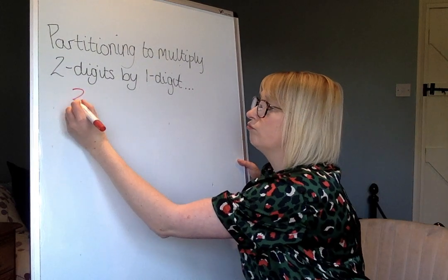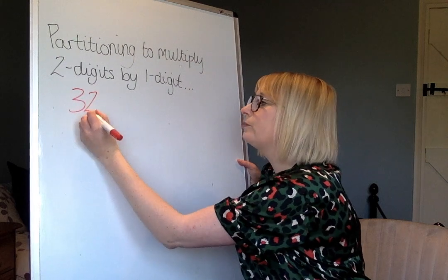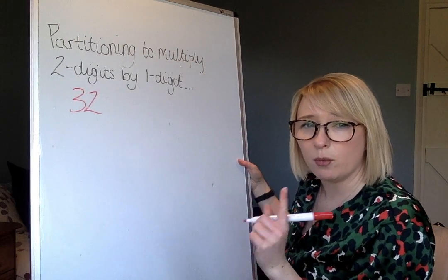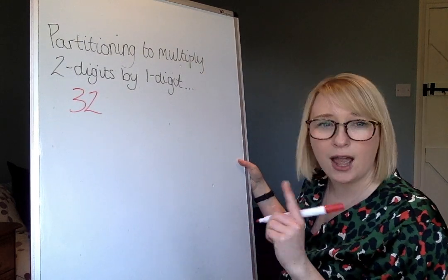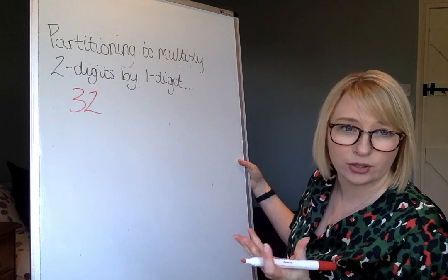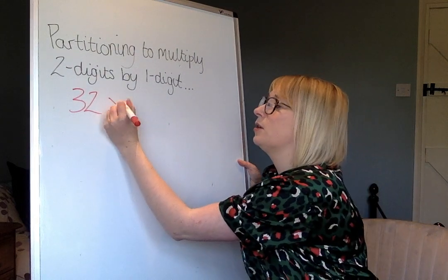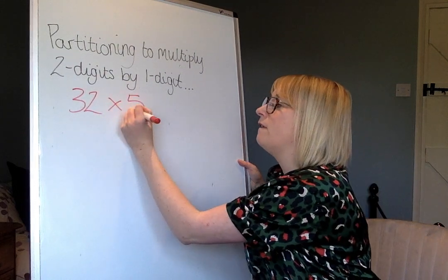Let's take a two-digit number to start with, for example 32, and I'm going to multiply it by a one-digit number, a whole number, also called an integer. I'm going to multiply it by five.